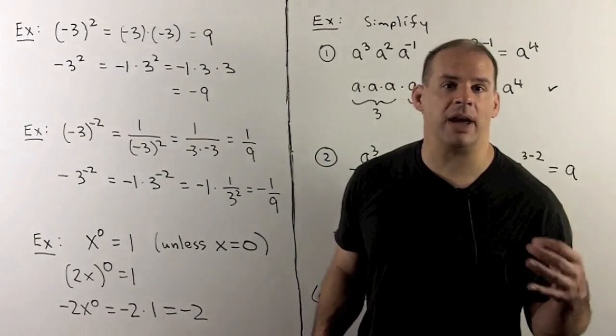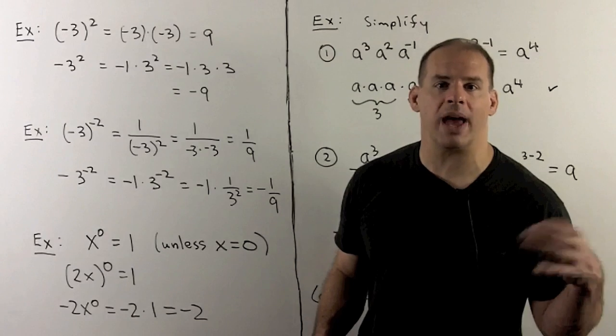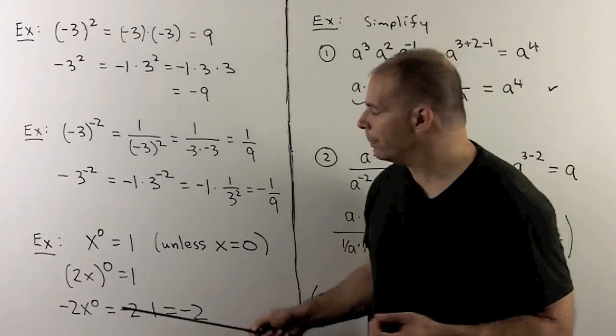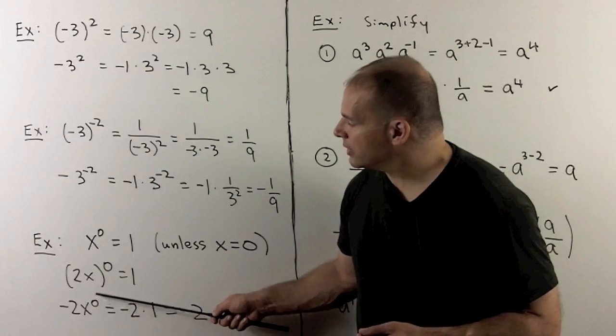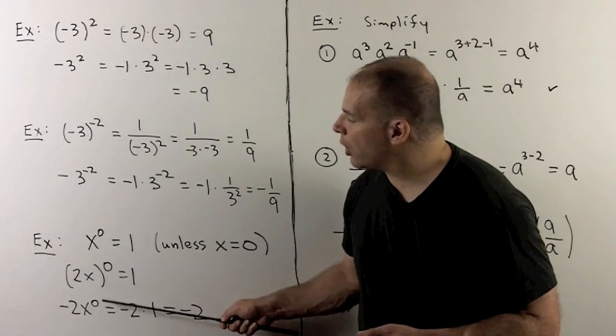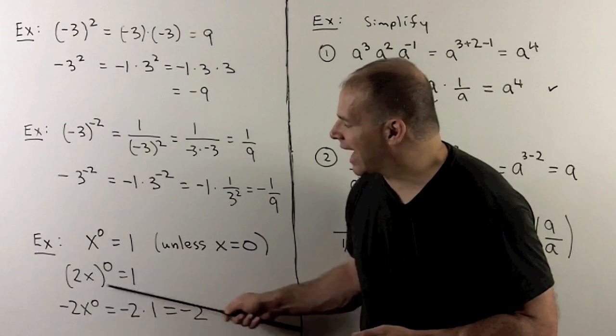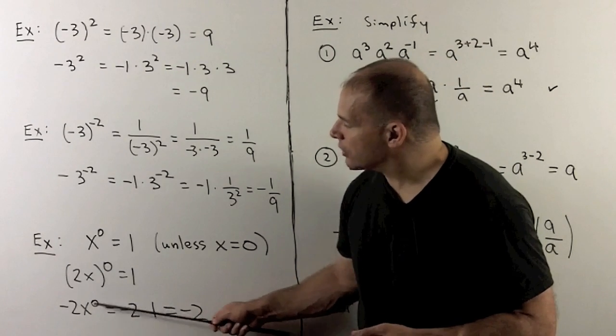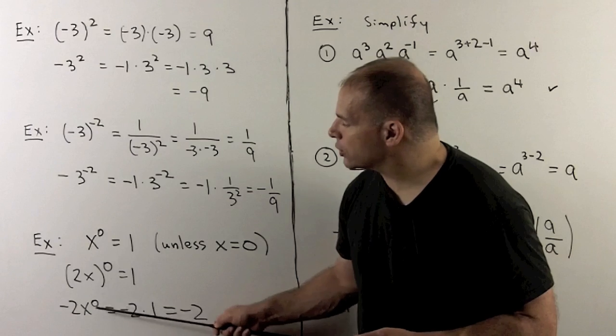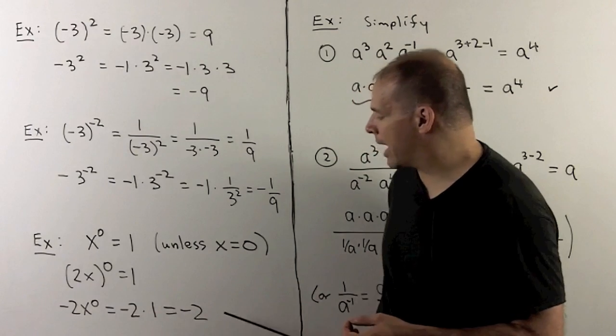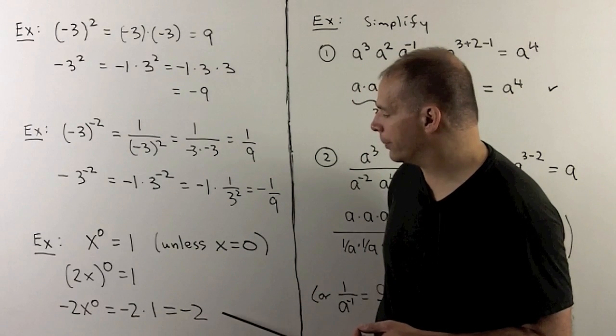On the other hand, if I had minus 2 times x to the zero, this zero exponent only affects the x. So the x to the zero goes to a 1, and then we wind up getting a minus 2.